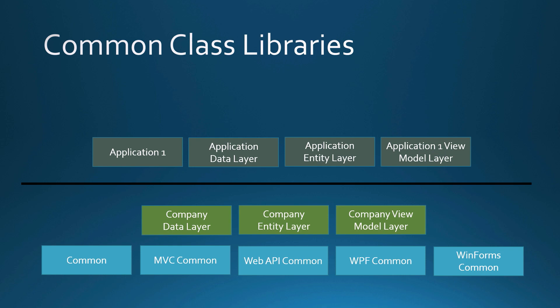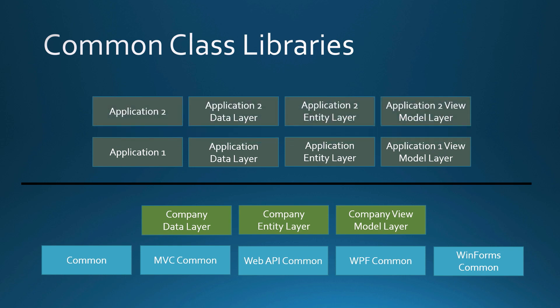If it's a Web API app, I might be using common and the Web API common. Maybe I build another application — I would break it out into its separate components, but it can also use the various layers below it. Maybe that one is a WPF application, so it might take advantage of common and the WPF common. The more you can break things up, the easier it is to reuse these classes, and you now have code in one place to do one thing.